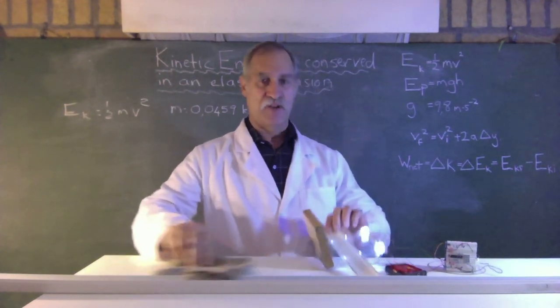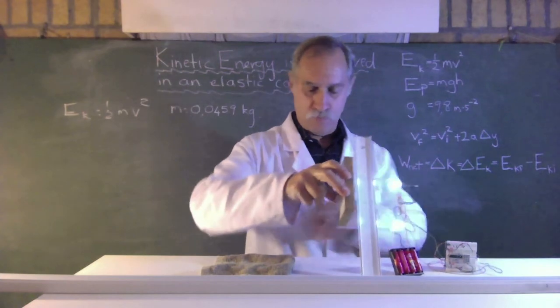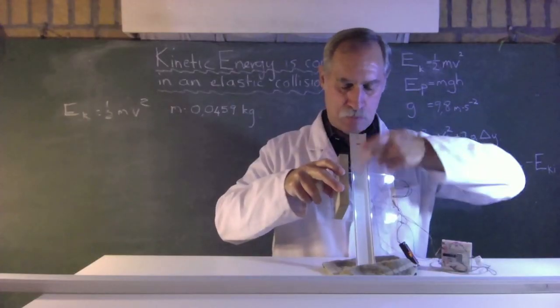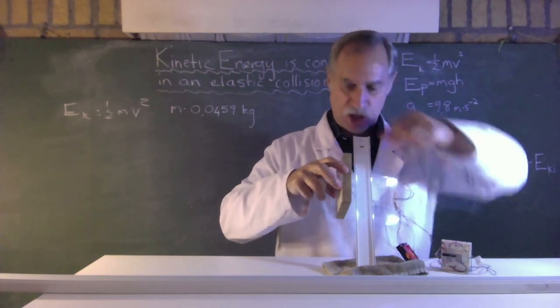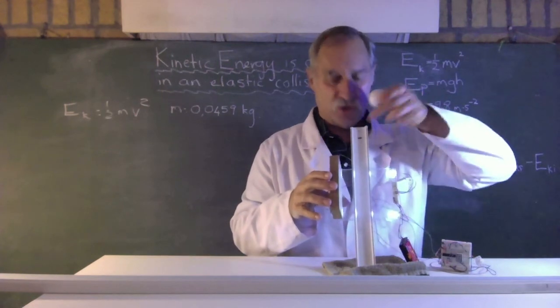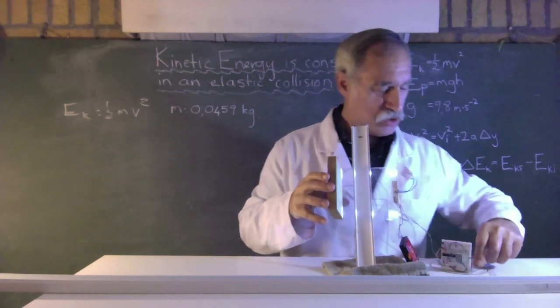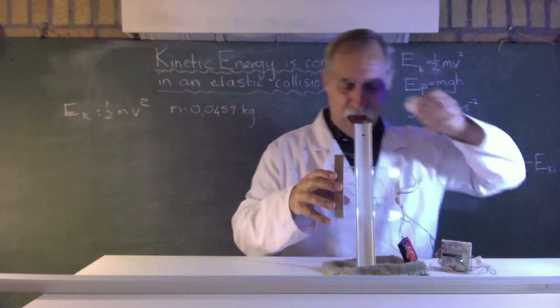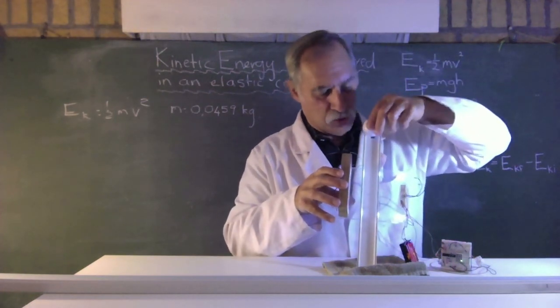So we have here a velocity meter. It basically has got a light beam that as the ball crosses it, it works out the velocity. And we're going to measure the velocity as it falls from a mark here. So let's switch on our computer and let's roll the golf ball down.